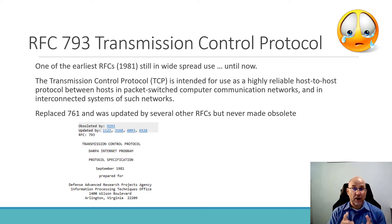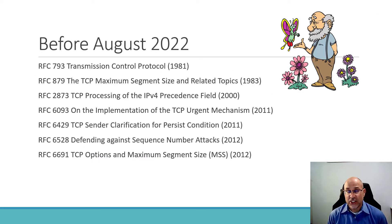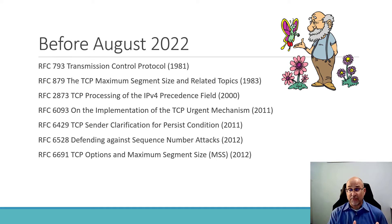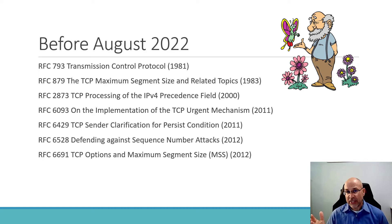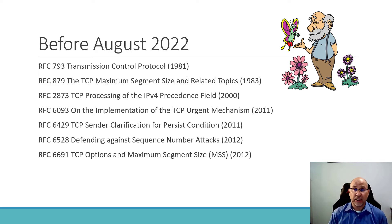But that all changed this month when TCP RFC 793 was obsoleted by RFC 9293. Before August 2022, we had the RFC for TCP and then a whole collection of RFCs that focused on things like maximum segment size — how big could a packet be — and the TCP urgent flag, one of the flags in the fields we're used to.